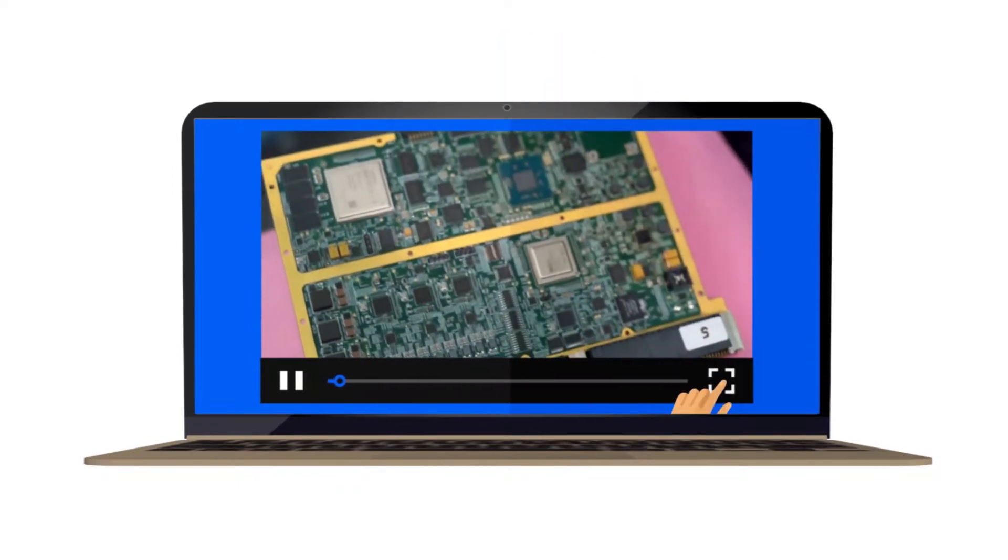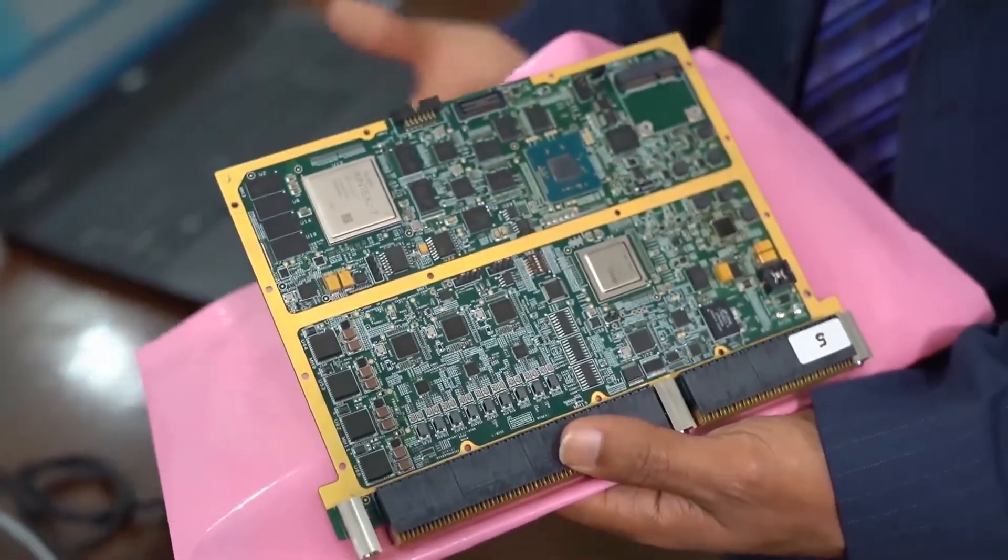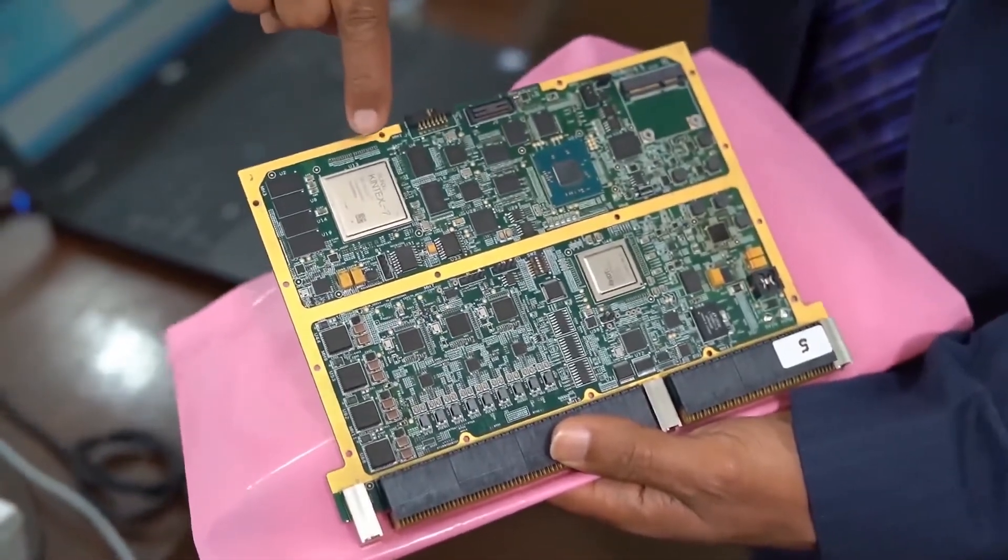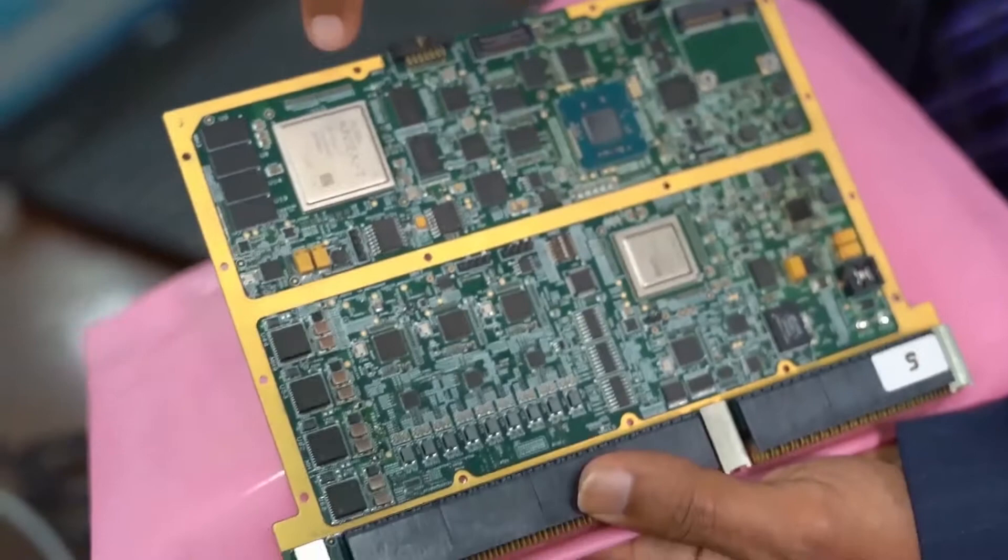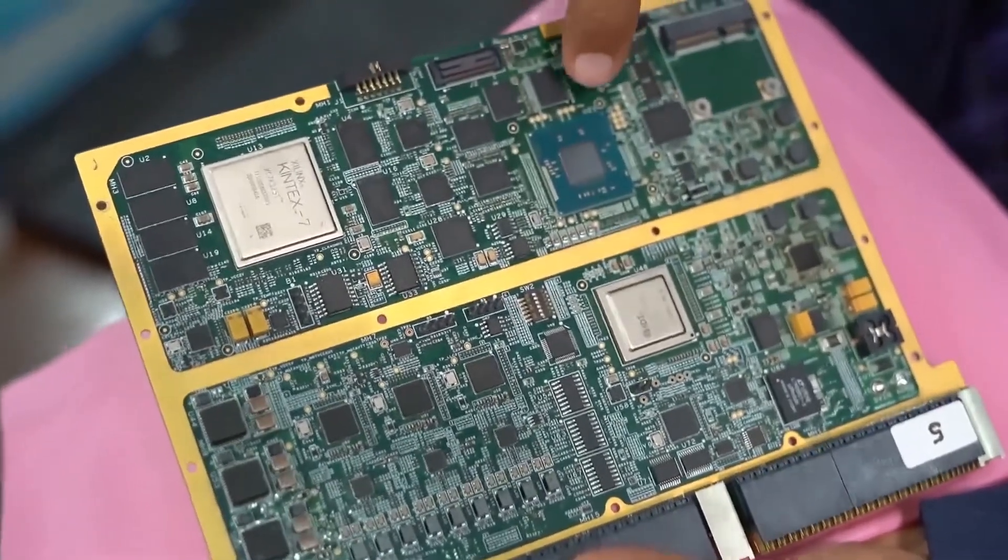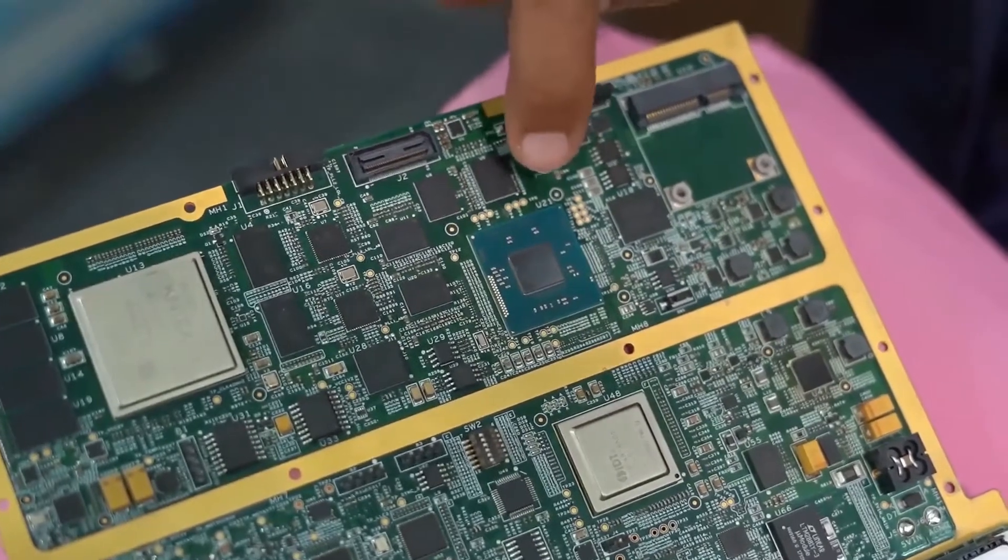This one is the AVPSM card, and this card has mainly two chips. This one is basically the FPGA, which has all hardware functionality implemented, and this one is an Intel microprocessor which has all software-related functionality implemented.